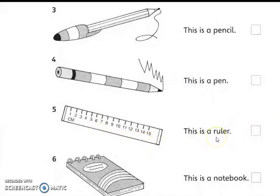Number five. This is a ruler. Okay, is it right? If right, you just tick. If wrong, you just cross.